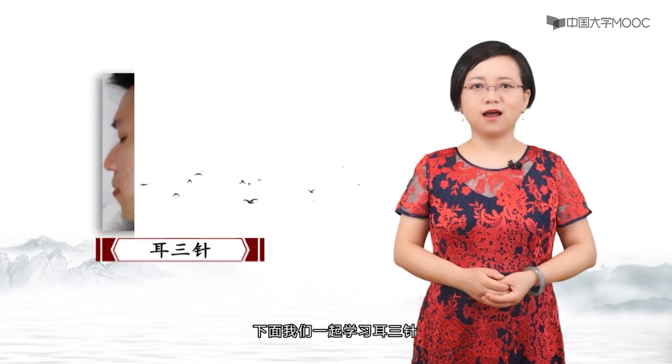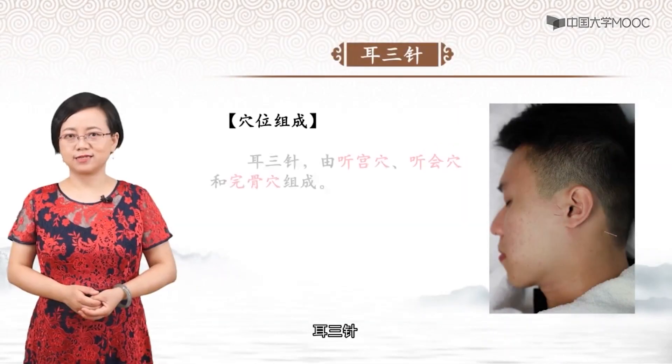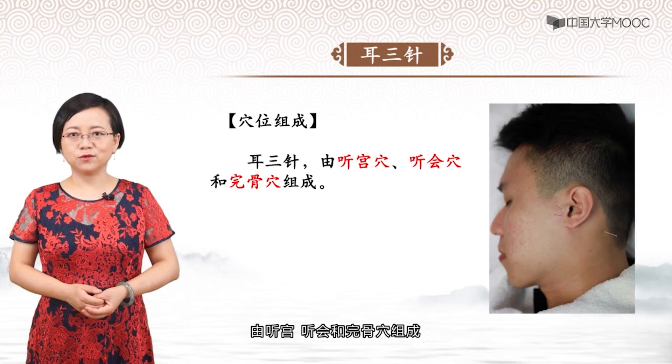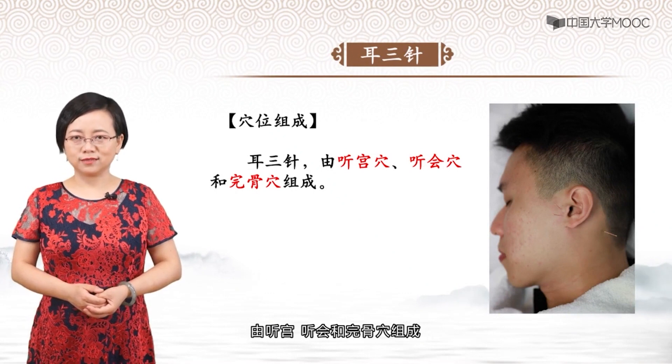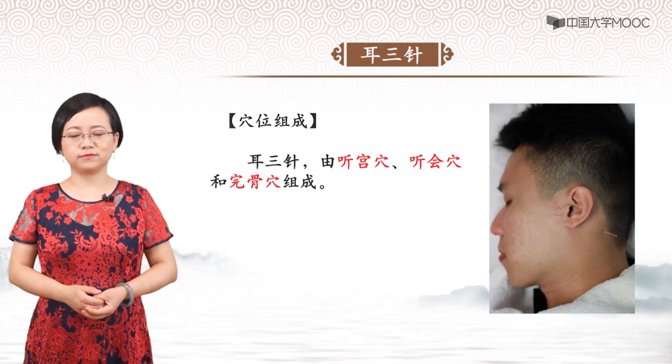下面我们一起学习耳三针。耳三针的穴位组成以及定位：耳三针由听宫、听会和完骨穴组成。